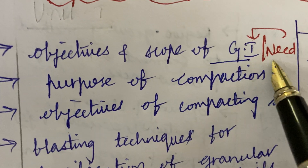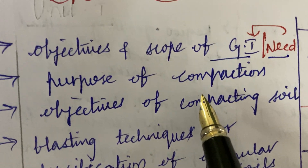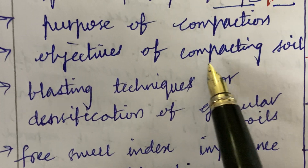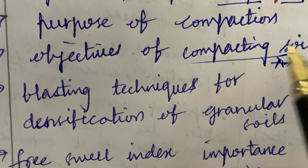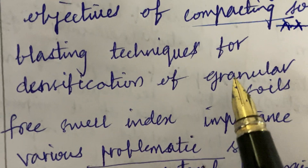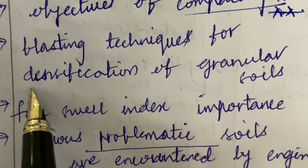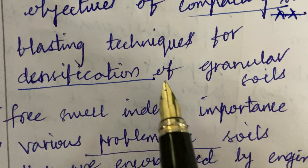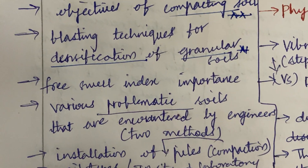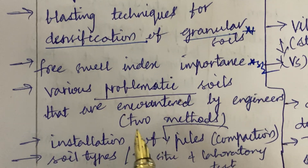The first and foremost topics are: the objectives and scope of ground improvement and the need for GI, the purpose of compaction, and the objectives of compacting soil — said to be a gunshot question. Techniques for densification of granular soil is another sure question. The freeze well index importance is a 2 to 3 mark question.